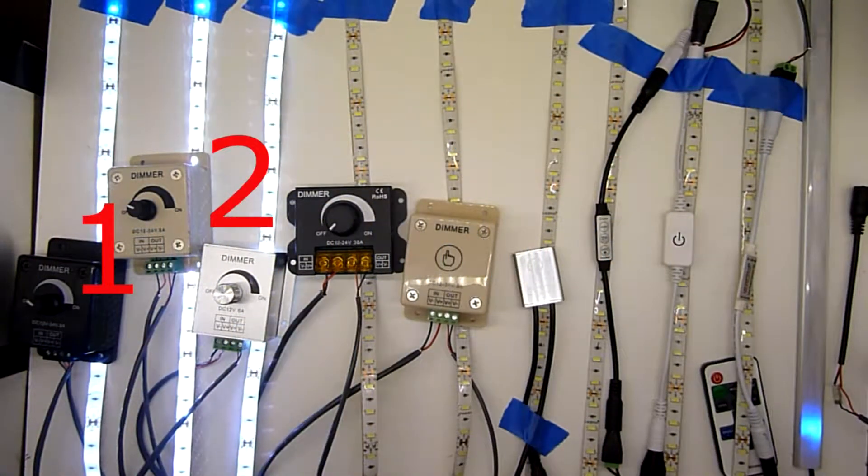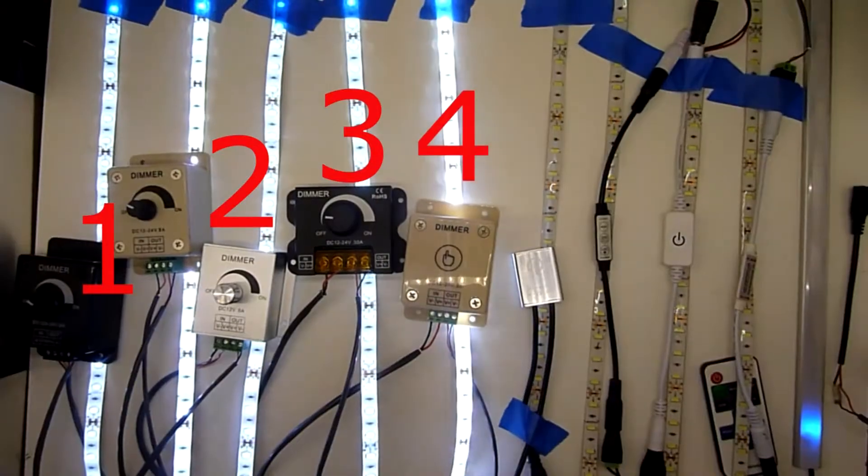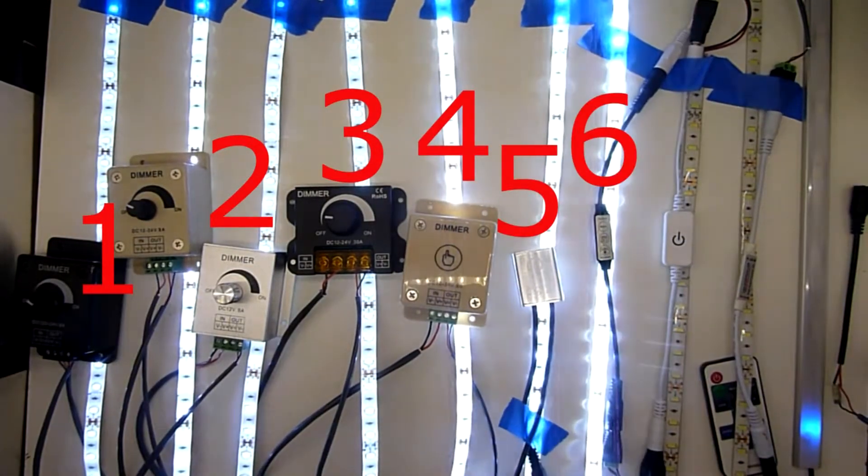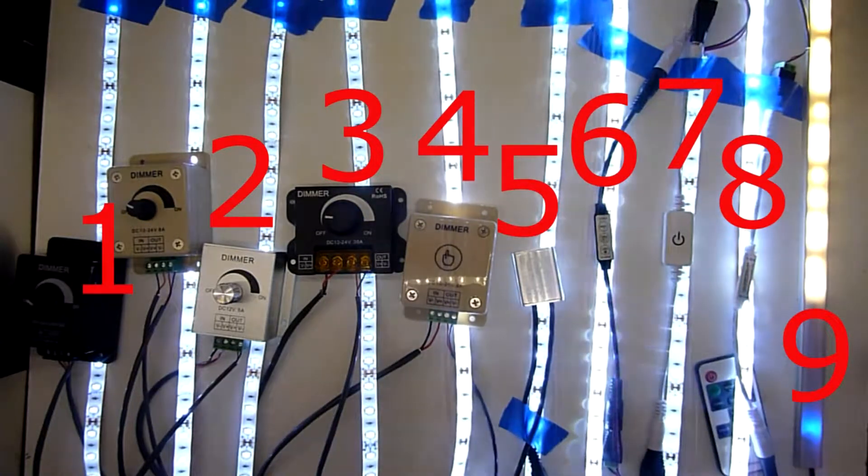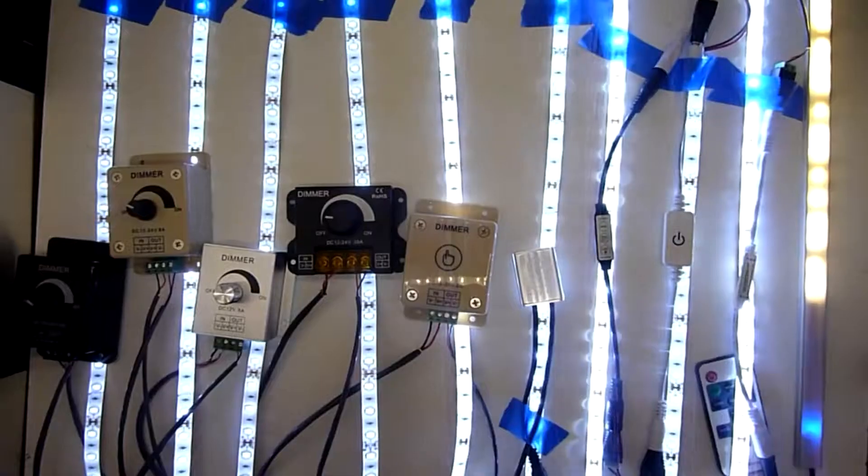Today we'll be reviewing 10 different 12-volt dimmers. All of these dimmers use integrated circuits, they're not just a potentiometer inside. They vary in voltage. The ones on this table are going to be 12 to 24 volt, we'll be talking about the 12-volt characteristics.